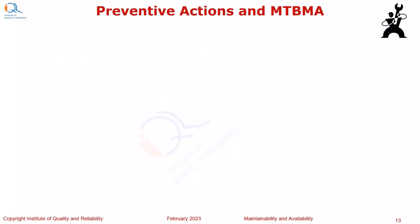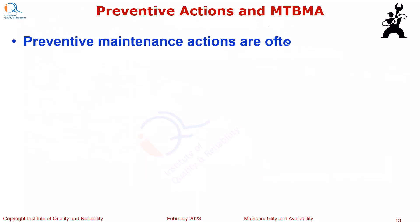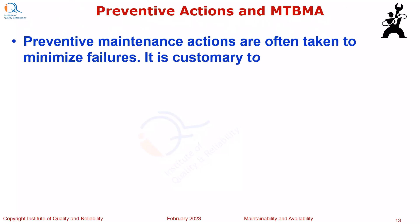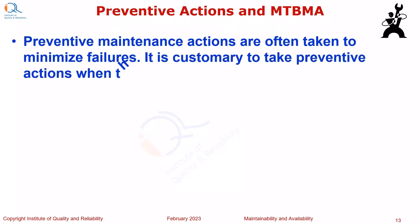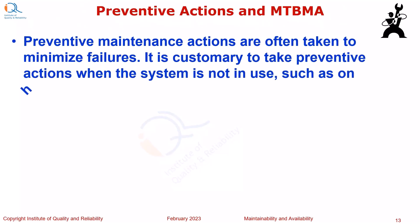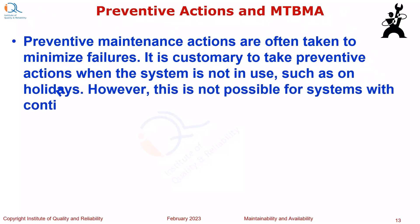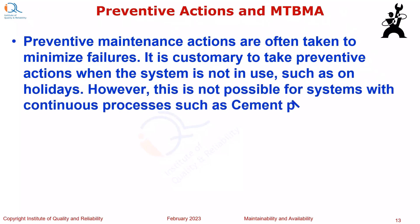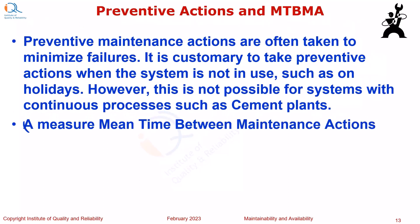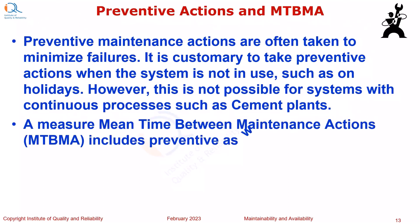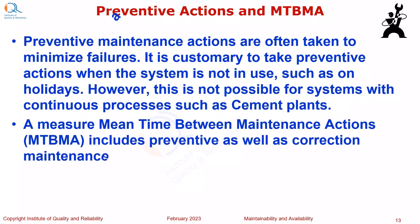Preventive maintenance actions are often taken to minimize failures. It is customary to take preventive actions when the system is not in use, such as on holidays. However, this is not possible for systems with continuous processes such as cement plants. Mean time between maintenance actions, or MTBMA, includes both preventive maintenance and corrective maintenance actions.